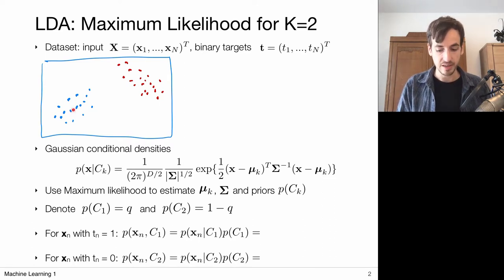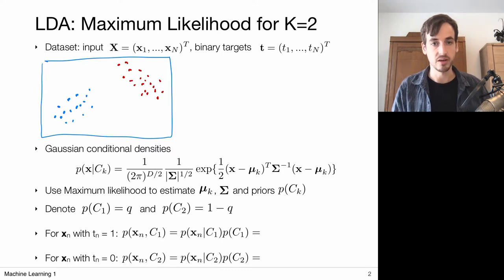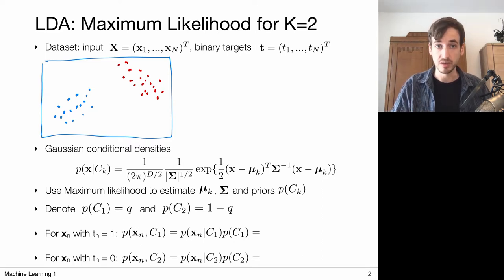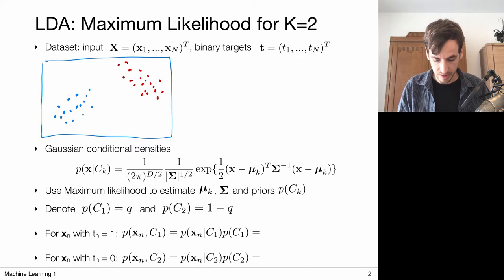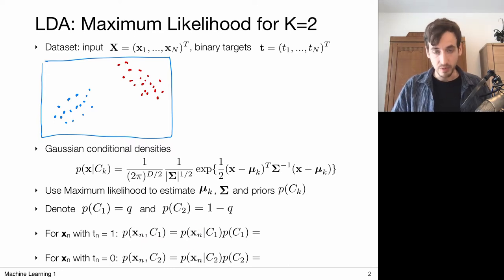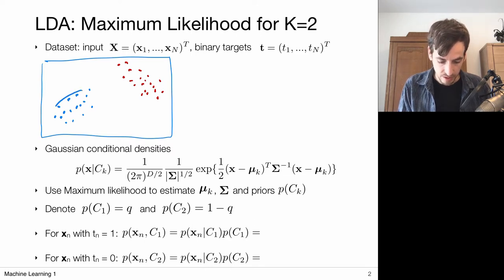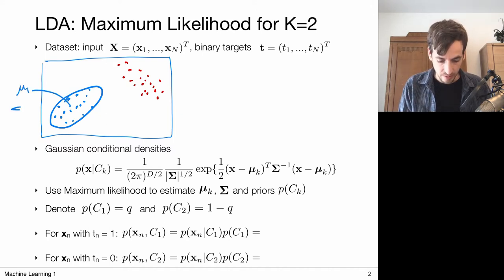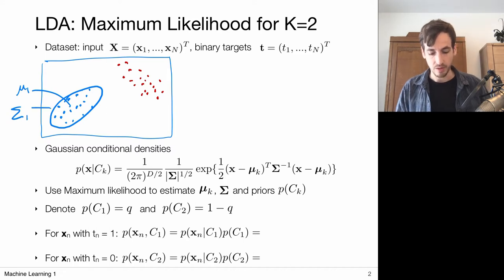Our objective is to recover the Gaussian distributions that generated this data. We want to recover the joint distribution, and we're going to do that via Gaussian conditional densities in combination with priors. We model these Gaussian conditional densities via a multivariate Gaussian distribution. We want to recover a distribution for class 1, which has a particular mean mu_1 and covariance matrix sigma_1.